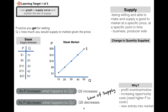I want to emphasize the difference between a change in quantity supplied versus a change in supply. A change in quantity supplied is caused by a price change — if the price of a good changes, then the quantity supplied changes. It would be incorrect to say that when the price of a good changes, the supply changes. This is shown by a movement along the curve. For example, at $5 the quantity supplied is 20, but if the price goes up to $15, the quantity supplied changes to 40 — that's a movement along the curve.